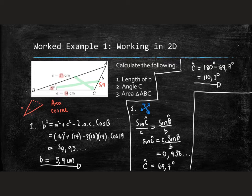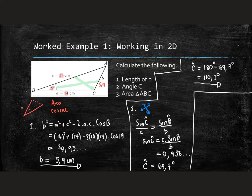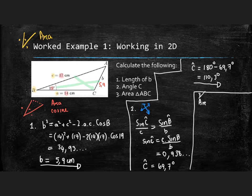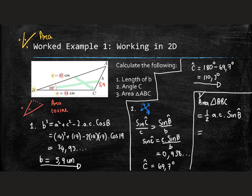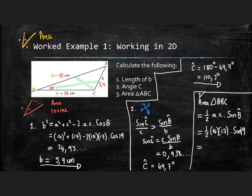For the last part, the area of triangle ABC, let's use the original given information: a side, an angle, and a side. With side-angle-side we have enough to use the area rule. Area of triangle ABC equals half times A times C times sine B, which is half times 14 times 17 times sine 19, giving us 38.7 centimeters squared.